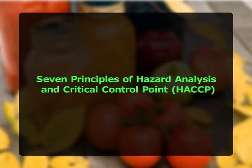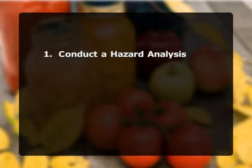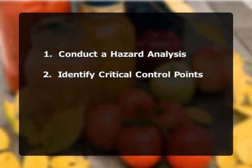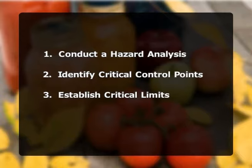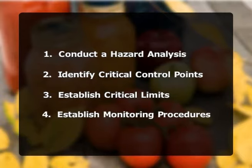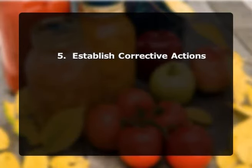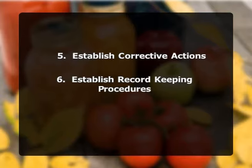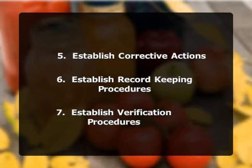The seven principles of HACCP to be understood and followed effectively are: first, conduct a hazard analysis; second, identify the critical control points; third, establish critical limits; fourth, establish monitoring procedures; fifth, establish corrective actions; sixth, establish record keeping procedures; and finally, establish verification procedures.